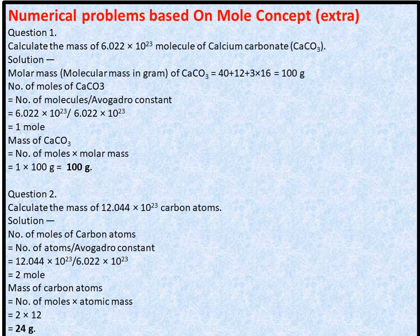Q2: Calculate the mass of 12.044 × 10²³ carbon atoms. Number of moles = 12.044 × 10²³ ÷ 6.022 × 10²³ = 2 moles. Mass of carbon = 2 × 12 = 24 grams.